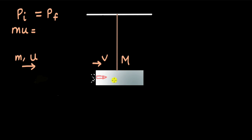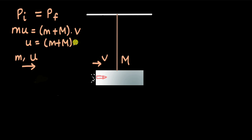The final momentum is for both bullet and block together — they become one mass — so it is (small m + capital M) times V. Therefore, u, the speed of the bullet, equals (m + M) times V divided by small m. We can measure the mass of the bullet and the block, but we don't know V, so we need to do something else.